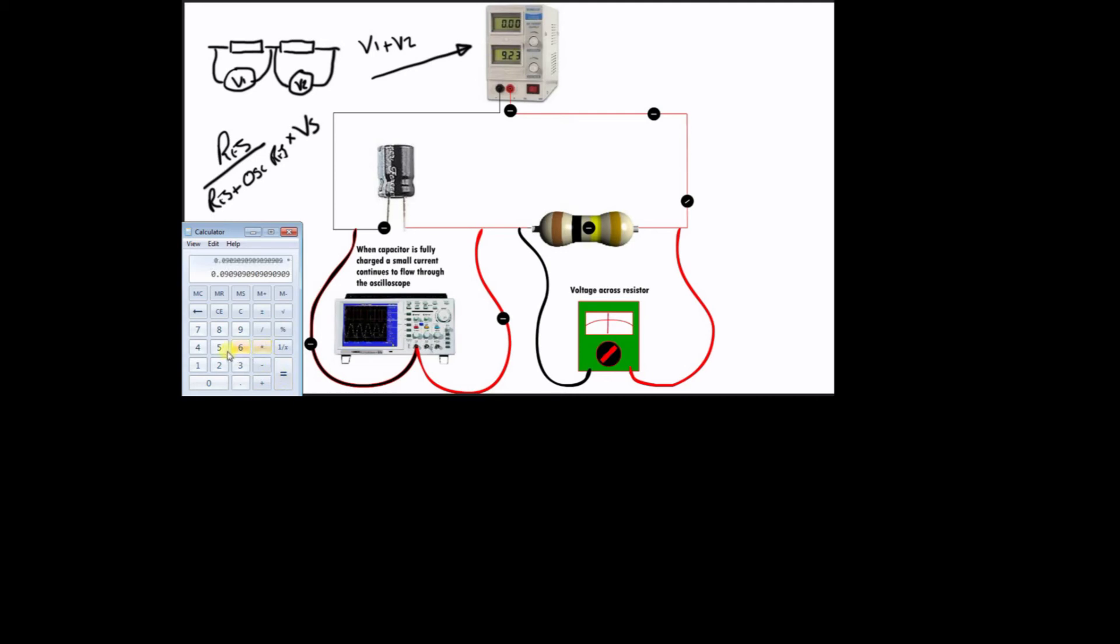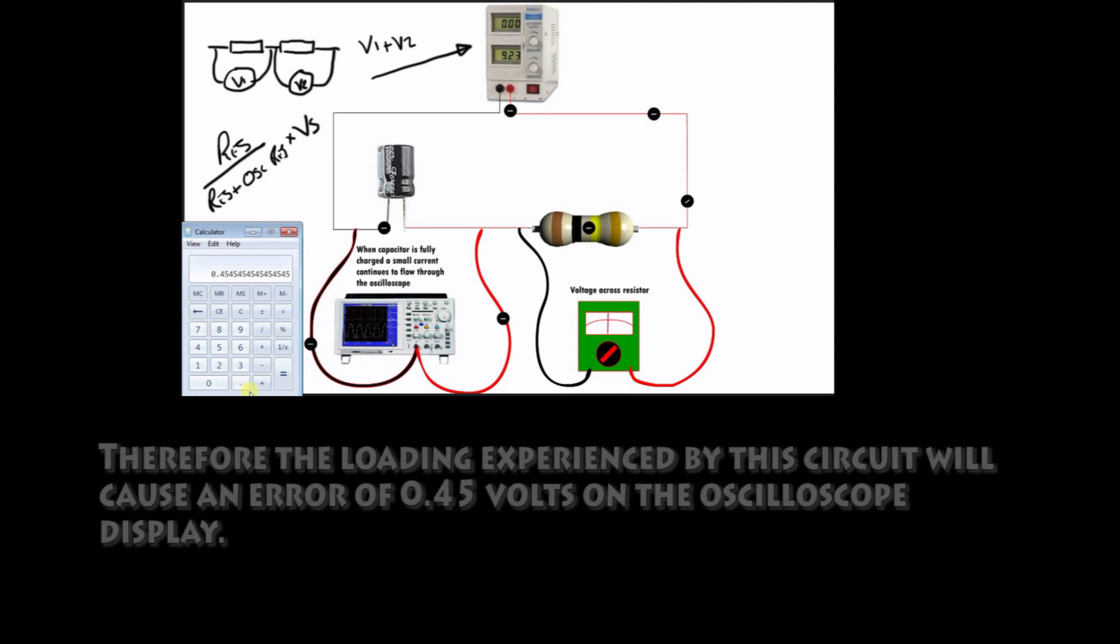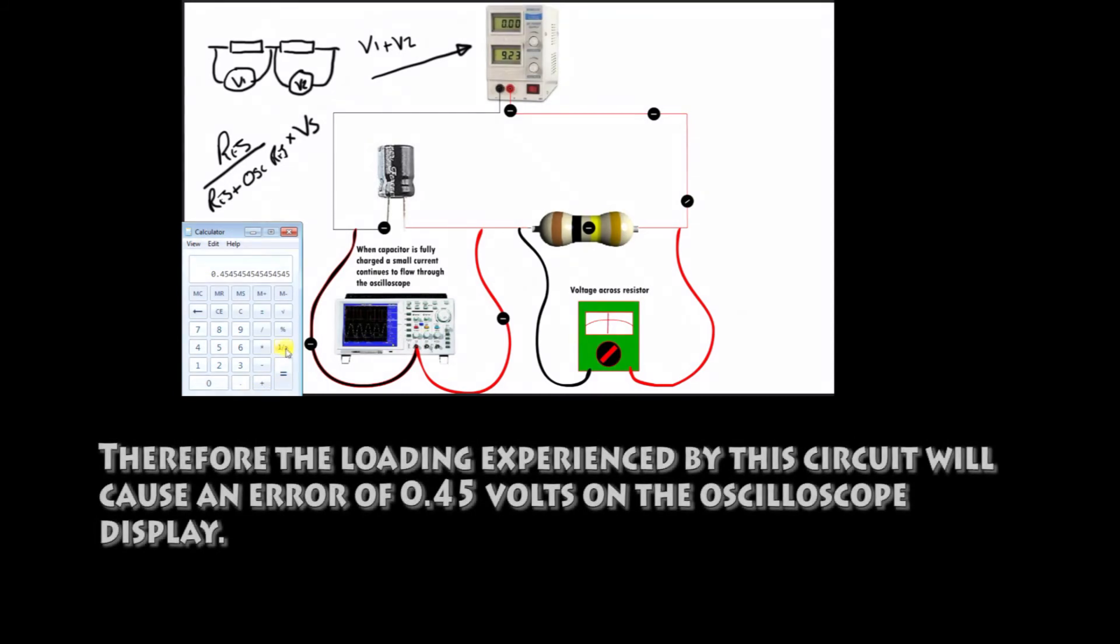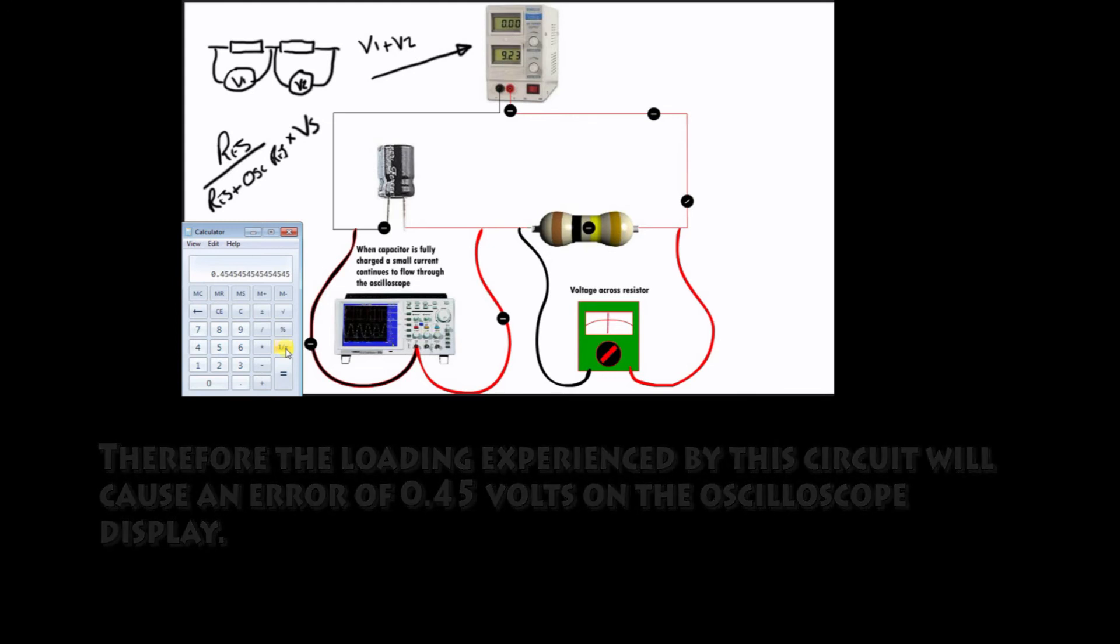And we get this, and then if we multiply that by 5, which is our supply voltage, that will give us the amount of difference between the two voltages. So we're going to drop 0.45 volts across the resistor and the remaining voltage will be dropped across the capacitor.